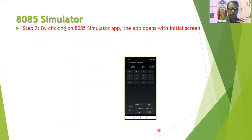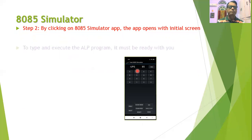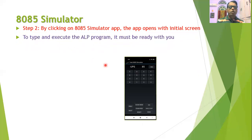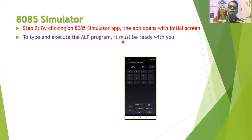When you click the 8085 simulator app, the app will get opened and the initial screen of the app will look like as shown in this diagram. Now you need to type your ALP program and you can also execute it using this app. Before you type your ALP program, it is necessary that your ALP program must be ready with you.